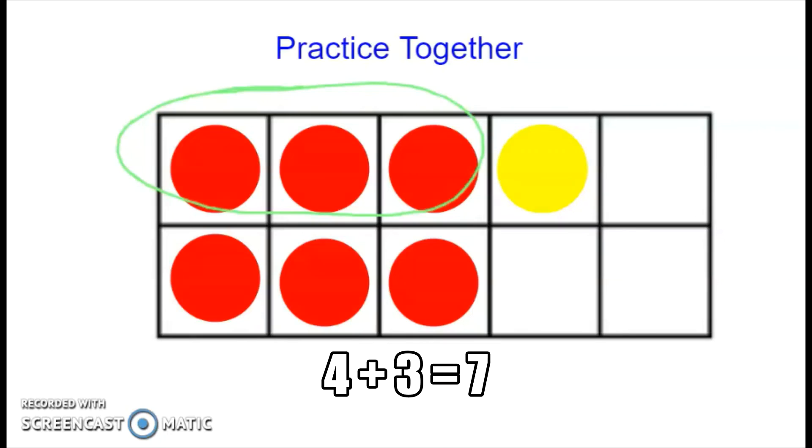Great. Now let's take a look at the bottom row. We also see that there are three dots down here.